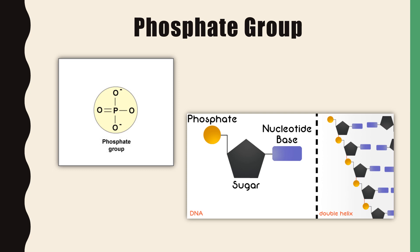The third building block is the phosphate group — simply a phosphorus surrounded by oxygen atoms. This building block bonds with the sugar building block to form the sugar phosphate backbone found in both DNA and RNA. On the other side of that sugar we have our nitrogenous base.